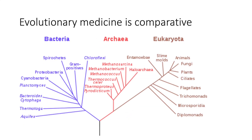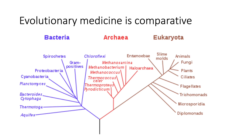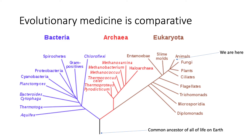Number 3: Evolutionary medicine is comparative. Humans are an animal species on the grand tree of life, and every species that exists on earth today all descended from a single common ancestor that originated about 3.5 billion years ago. Through a universal perspective of life, we can compare features among species to help us learn important aspects of our own health.